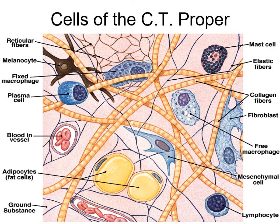The fixed macrophage lives in the tissue and doesn't move; the free macrophage is mobile and can move in and out - usually arriving due to infection. A macrophage is actually a white blood cell, usually a monocyte. You see many little vesicles within it - probably lysosomes and peroxisomes - because their job is to engulf bacteria and cellular debris, break it up, and reuse that material.